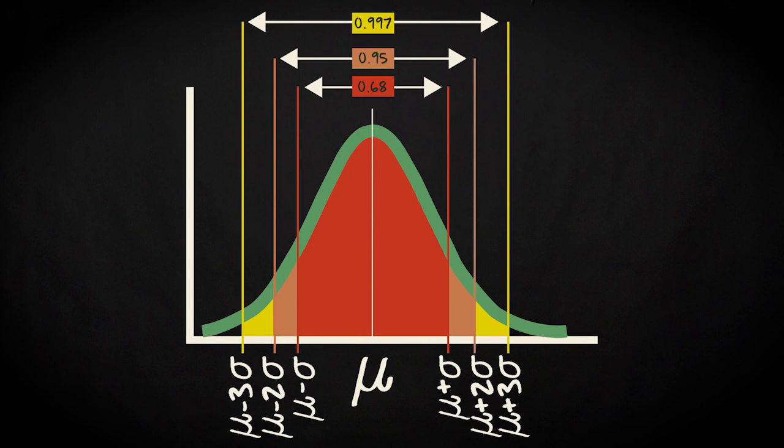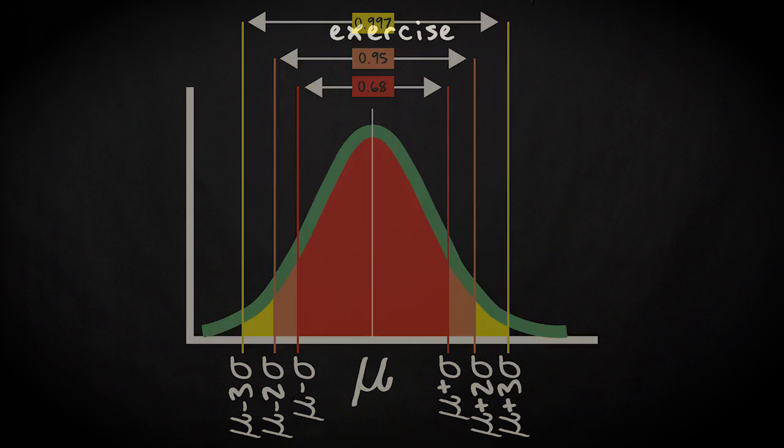These probability values for intervals of 1, 2 and 3 sigma around the mean of a normally distributed variable are often used in statistical calculations. Let me illustrate the 1, 2 and 3 sigma rules further with an exercise.